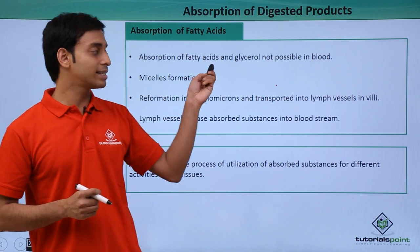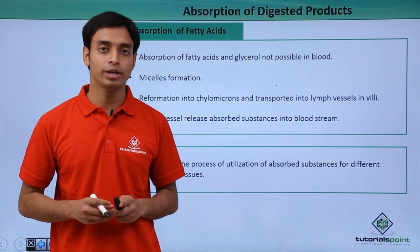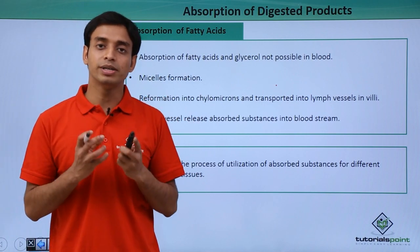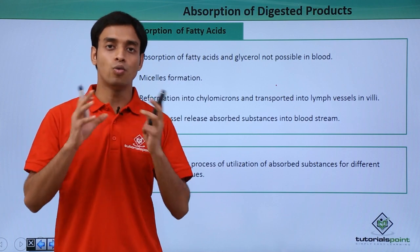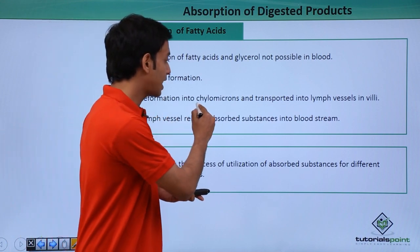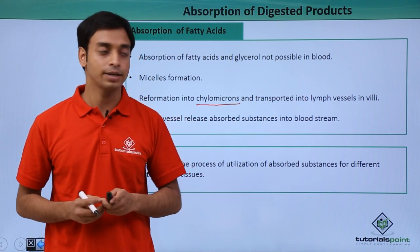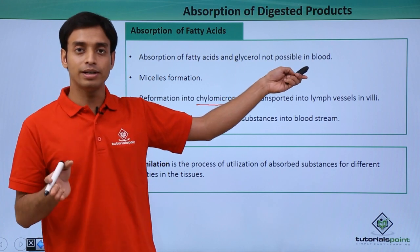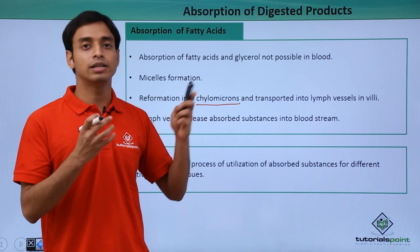The absorption of fatty acids and glycerol cannot happen directly into the blood because they are not soluble in water or blood. Instead, micelle formation takes place — micelles are circular structures formed by fatty acids to avoid water molecules. These micelles lead to the formation of structures known as chylomicrons, which are transported into the lymph vessels in the villi of the small intestine. The lymph vessels then slowly release the absorbed substances into the bloodstream.